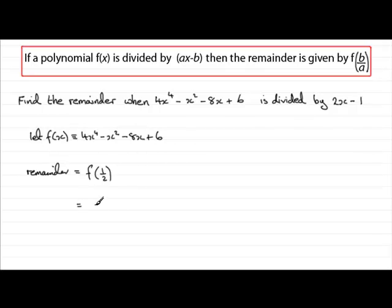So all we need to do then is substitute half into here. We've got 4 times a half to the power 4 minus a half all squared minus 8 times a half plus the 6. And if you work that out, what you're going to get is that remainder, and that comes to 2. Leave it to you to check that out.